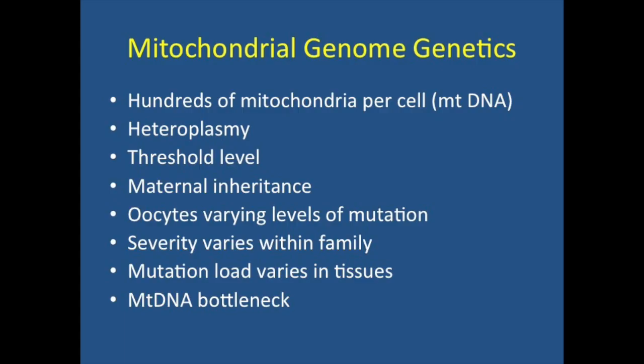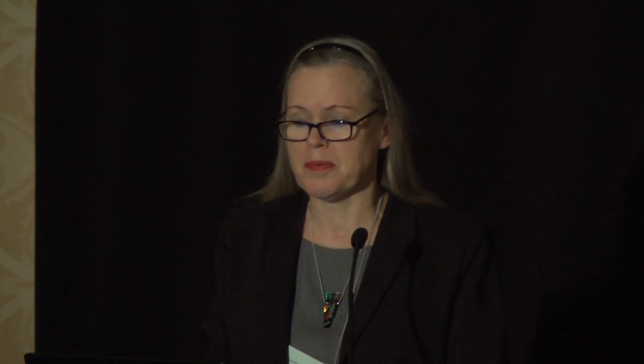You all know there are hundreds of mitochondria in a cell. The mitochondria have both mutated and wild-type mitochondria — a condition known as heteroplasmy. Above a certain level of mutated mitochondrial DNA, a person will become symptomatic. All these mutations are maternally inherited, and the oocytes in an individual vary in their levels of mutation. So some people may have the mitochondrial disorder in the family and others may not, depending on the level of mutation. People want to know about family planning — what can they do to try to prevent this in their offspring? Oftentimes people in the mitochondrial community, because there's not a lot available, just take a chance and hope for the best. Some people adopt; some people have no children.